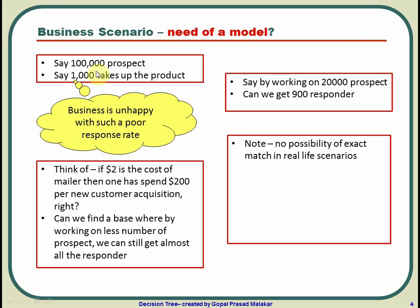Someone new to this may ask: why can't you just target exactly the 1,000 people who will take the product? But that scenario does not exist. Model building is based on propensity — it tells you which group has a high chance of responding compared to the base. There is no way to identify only the exact 1,000 buyers, because even among high-propensity individuals, some may simply not have had the time to get the product.